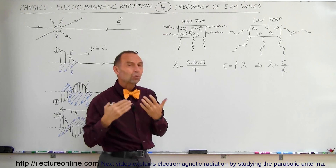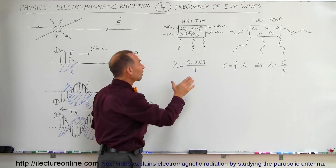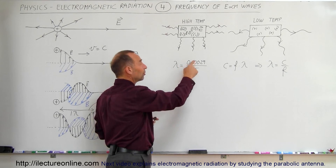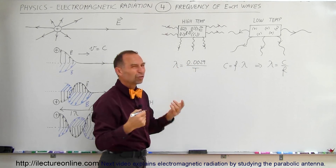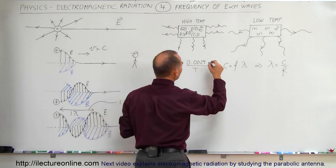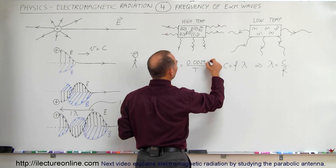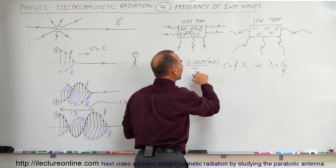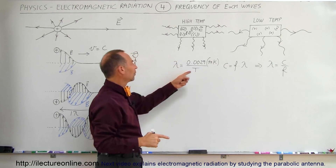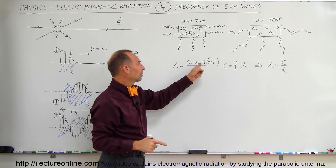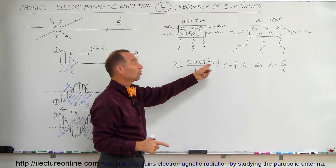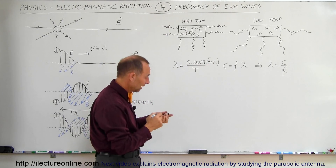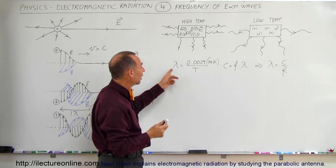This is known as Wien's Law. Wien discovered that the wavelength is equal to some constant — in this case 0.0029 meter·Kelvin — divided by the temperature. When we divide the temperature into this number, Kelvin will cancel out and we are simply left with meters, giving us the wavelength in meters. And so this is known as Wien's Law.